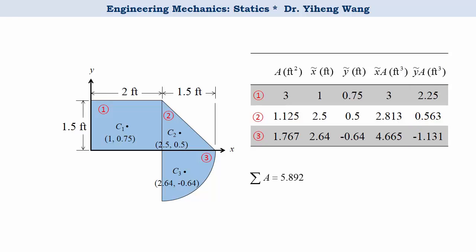Add the term A together to get the total area, and also add the term x-tilde times A, and y-tilde times A together. And then plug them into the equations, and calculate the coordinates of the centroid for the composite area, x-bar and y-bar.